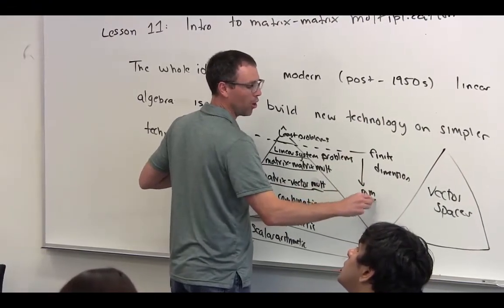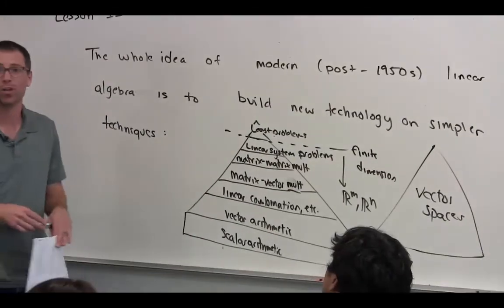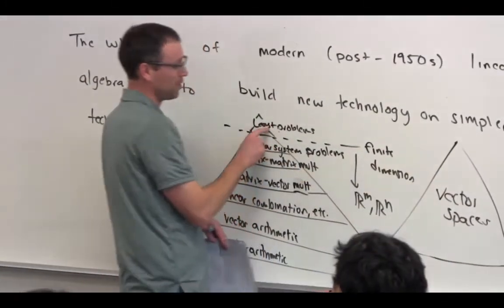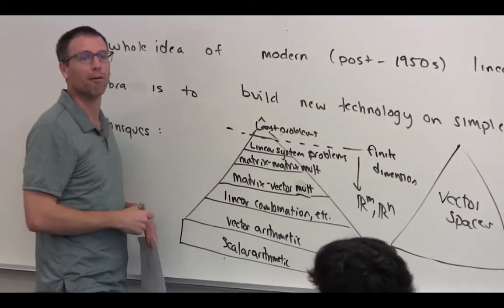In other words, you can think about this as like R^M. They're the least interesting vector spaces that exist in the world. They're very interesting, don't get me wrong. But compared to the vector spaces that we'll study in function space and some of the stuff that we're doing here, they're not interesting enough, right?